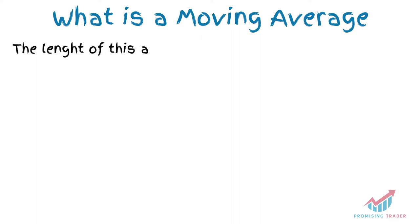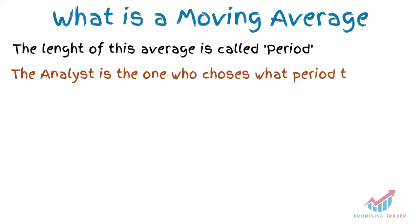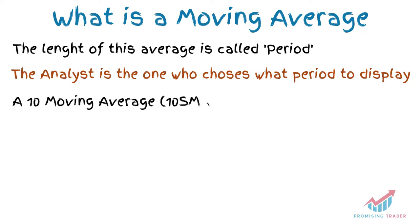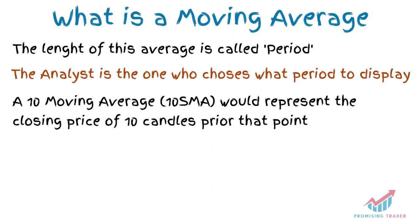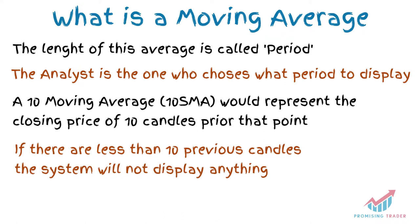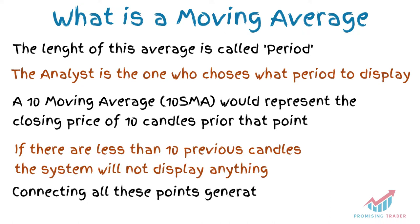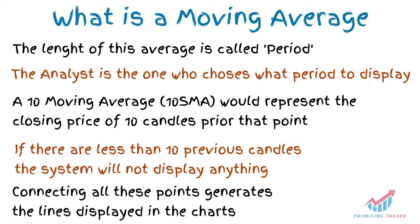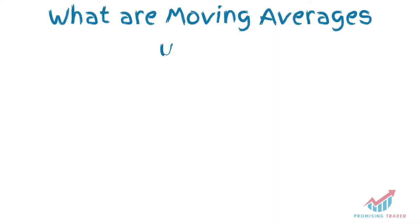The number of candles prior to that point is called the period, and it is up to the analyst to choose what period to display on the screen. For instance, if we have a Moving Average for the previous 10 candles, we will have a point representing the average closing price of those 10 candles. We need at least 10 older candles to be displayed, otherwise the system will not display anything. If the Moving Average appears as a line, it is thanks to connecting these points between each other.